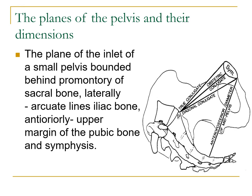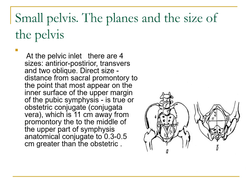The plane of the inlet of the small pelvis is bounded behind by the promontory of the sacral bone, laterally by the arcuate lines of the iliac bone, and anteriorly by the upper margin of the pubic bone and symphysis. Your inlet is measured by reaching your sacral promontory, which would determine your conjugates. At the pelvic inlet, there are four sizes.